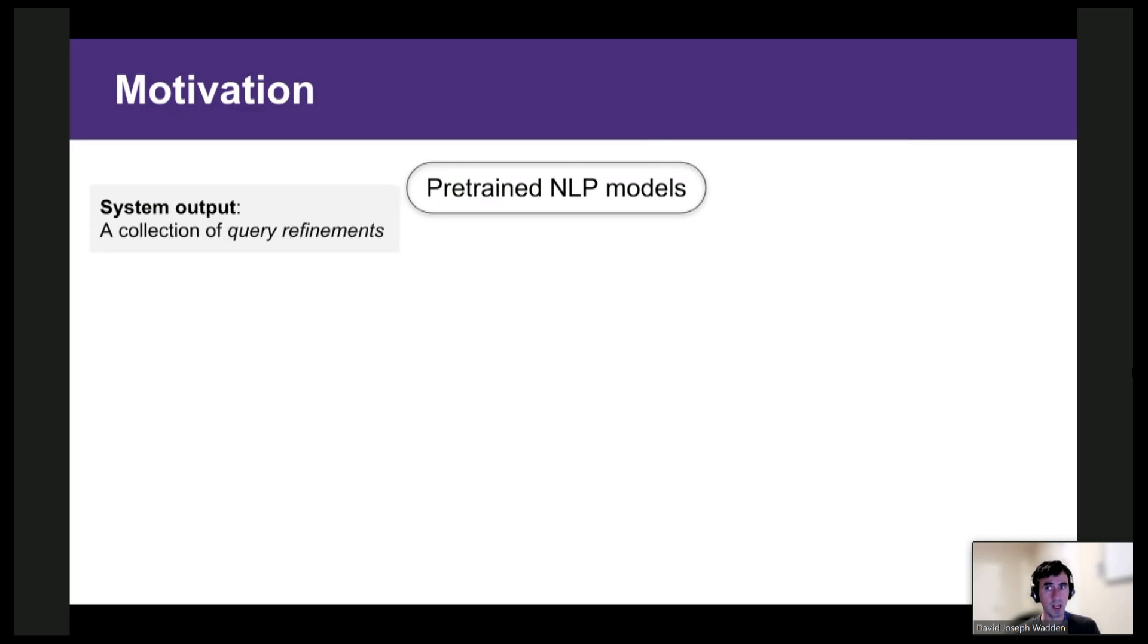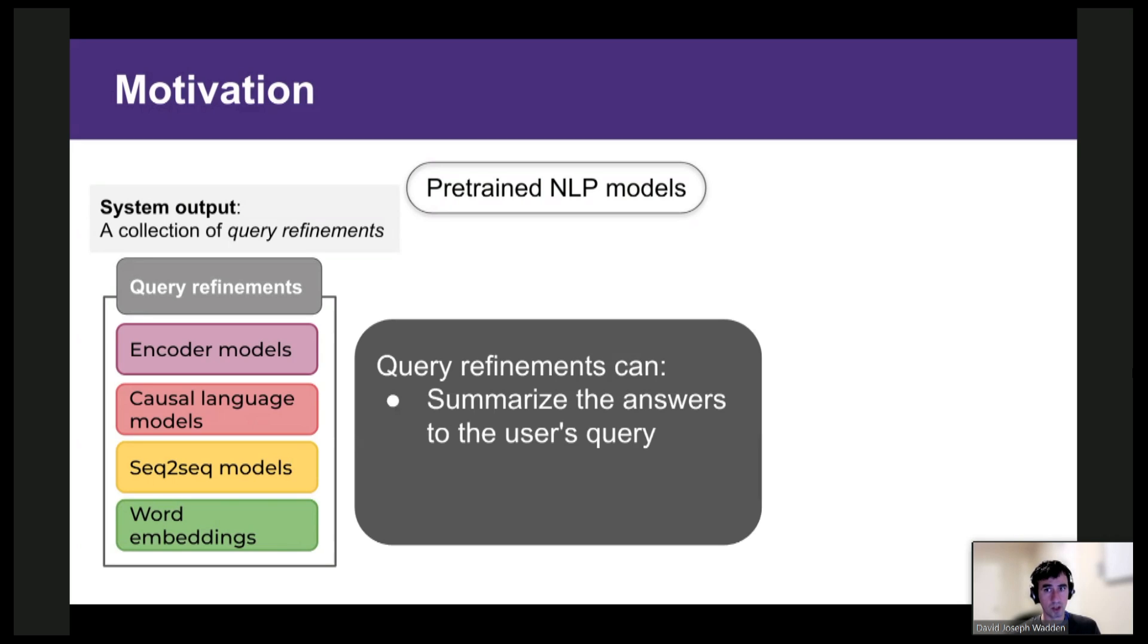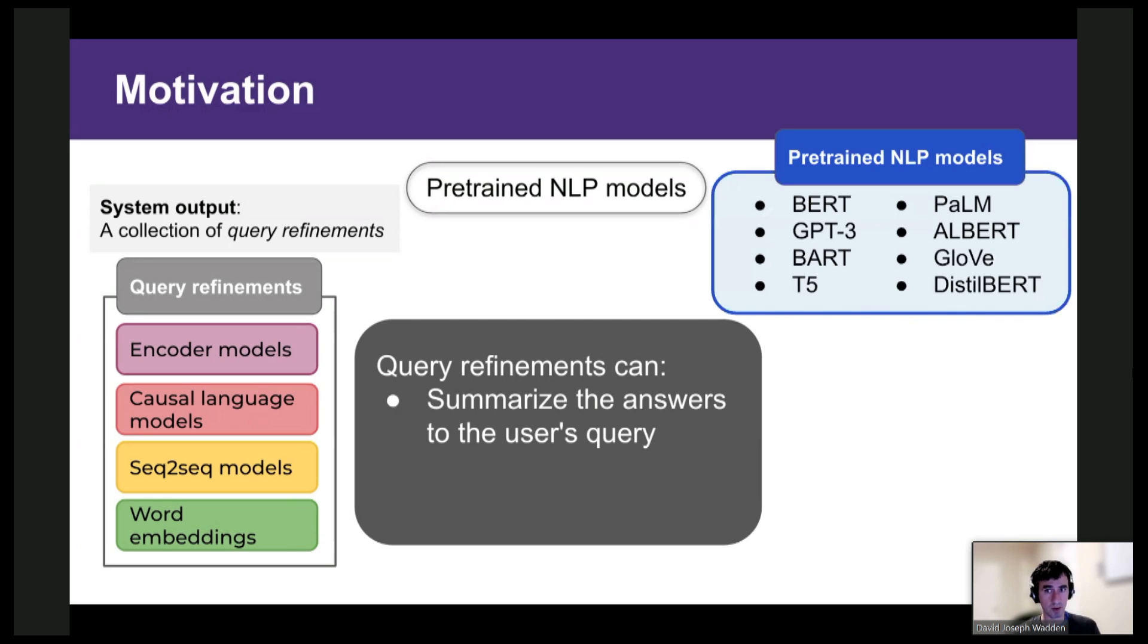So instead, we propose to show the user a small collection of query refinements, for instance, encoder models, causal language models, seq-to-seq models, and word embeddings. And this output enjoys two advantages. First, the refinements serve to organize the answer space for users who aren't familiar with pre-trained NLP models. So here I'm showing the answer space and we can see that some of the models are encoder models, some are causal language models, some are seq-to-seq, and GloVe is a word embedding model.